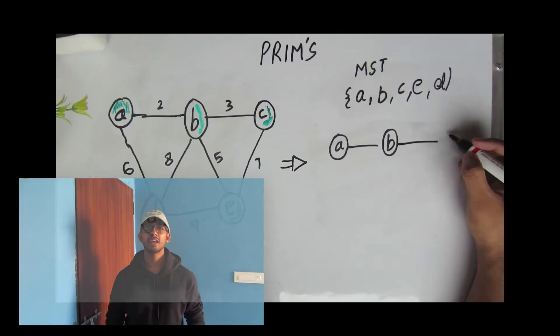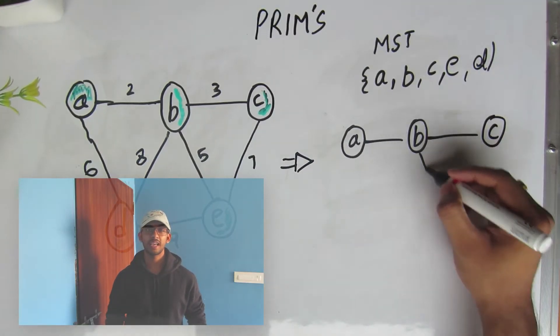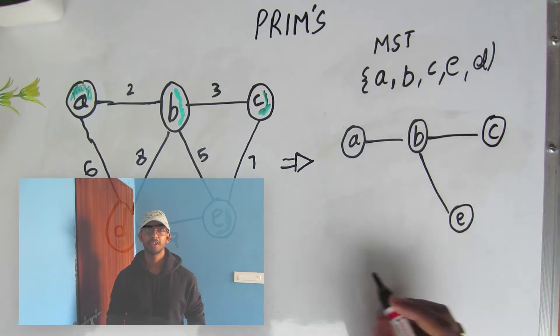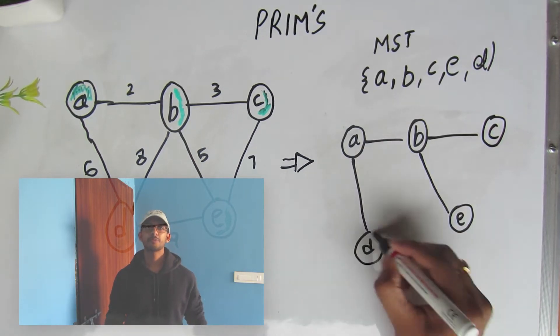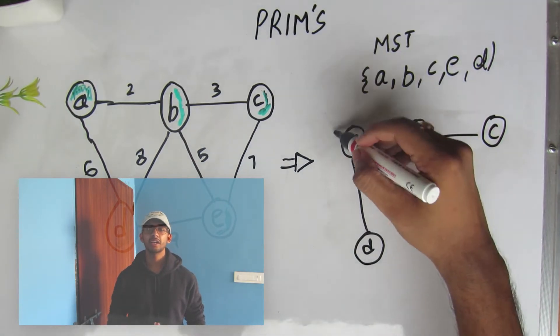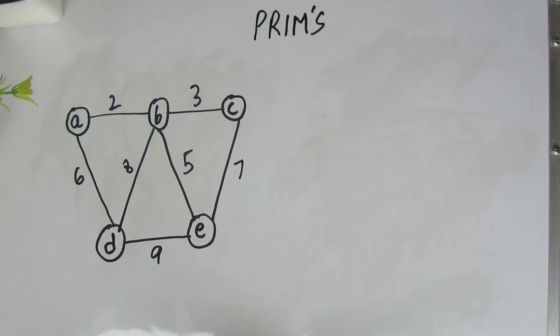Hello guys, this is Aim and welcome to the channel. In the last video, which was the introduction to Prim's algorithm and minimum spanning tree, we constructed a minimum spanning tree using Prim's algorithm in a given graph. We also learned that it is not efficient to implement practically, so in this video we will be learning how to solve Prim's algorithm using a greedy approach.